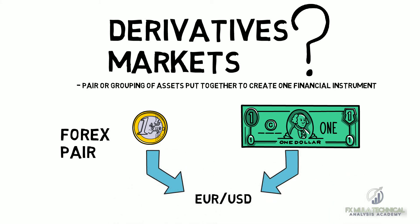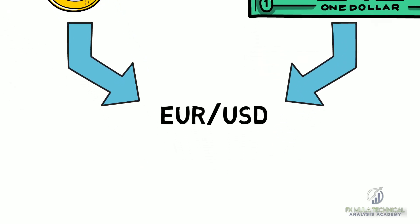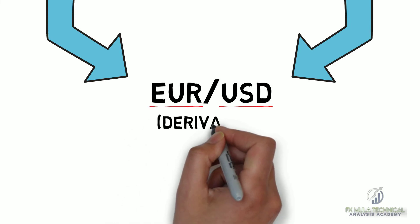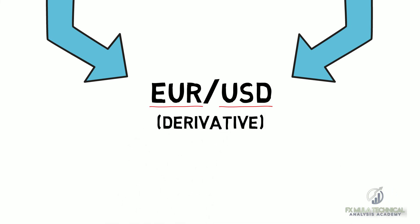Currencies trade against each other as an exchange rate pair. For example, EURUSD is a currency pair for trading EUR against the U.S. dollar. That is a currency pair, which is a derivative. That's our lesson for today, guys.